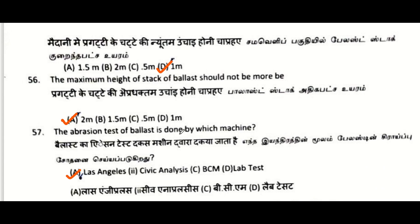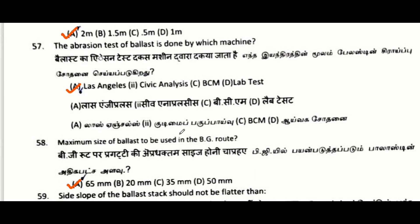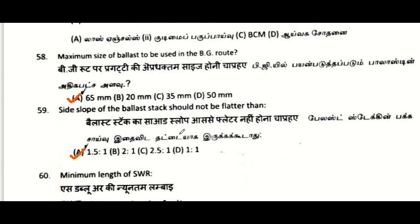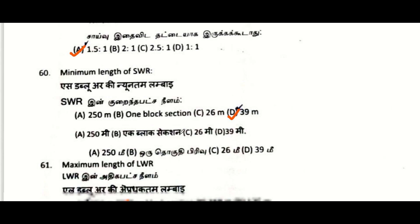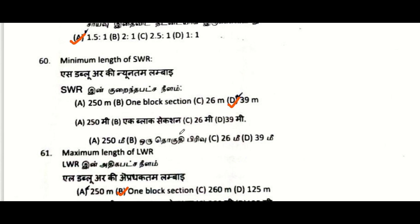At plain area, the minimum height of a ballast stack is one meter. The maximum height of a stack of ballast should not be more than two meters. Abrasion test of ballast is done by which machine: Los Angeles. Maximum size of ballast to be used on BG route: 65 mm, as the maximum sieve size is taken as 65 mm.